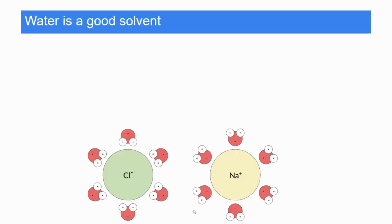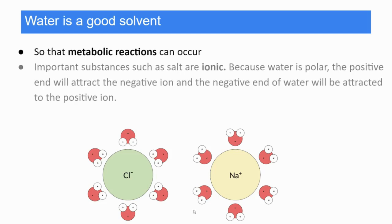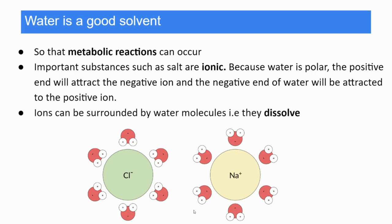Water is known as a good solvent so metabolic reactions can occur. Important substances such as salt are ionic. Because water is polar, the positive end will attract the negative ion, the negative end of water will be attracted to the positive ion. So ions can be surrounded by water molecules, meaning they will dissolve.